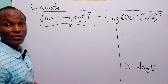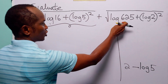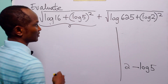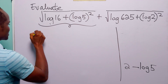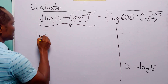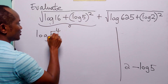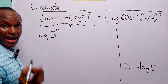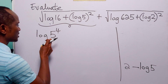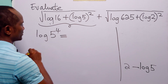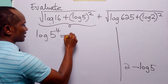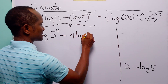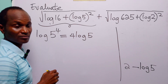Now in the same way let us look at log 625. This is log 5 raised to the power 4. Once more, when we apply the power rule of logarithms, we have 4 times log 5.